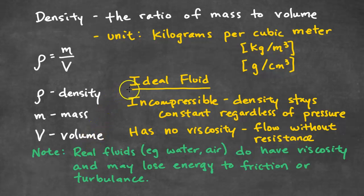When we say ideal fluid, we're talking about a fluid that is incompressible. That means its density stays constant regardless of pressure. It has no viscosity, which means it flows without resistance. Note that real fluids, such as water and air, do have viscosity and may lose energy to friction or turbulence.